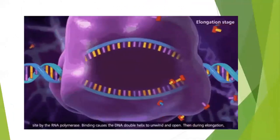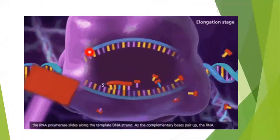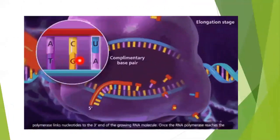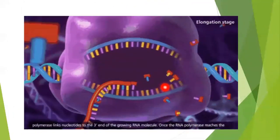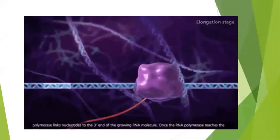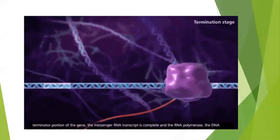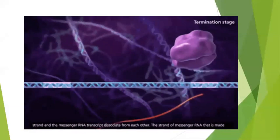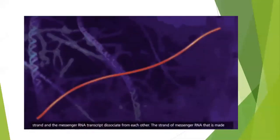As you can see here, this is the formation of mRNA with RNA polymerase forming complementary bases. Once the messenger RNA is ready, it will leave the nucleus and enter the cytoplasm. This is the mRNA leaving the nucleus, and the process that happens in the cytoplasm is called translation.